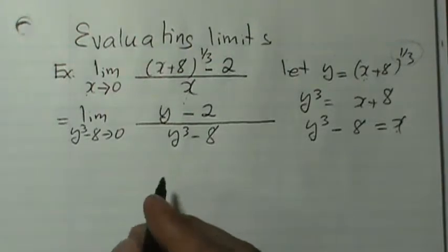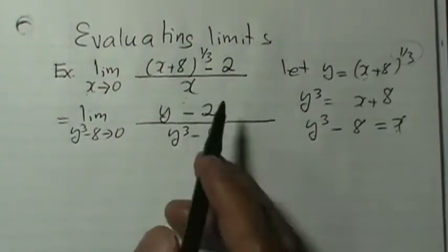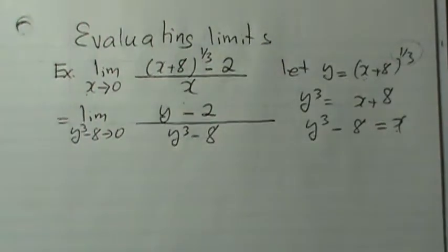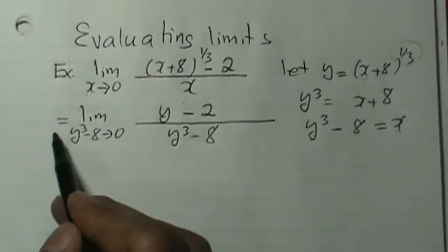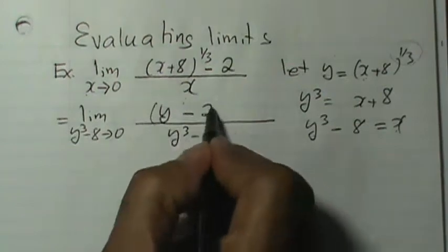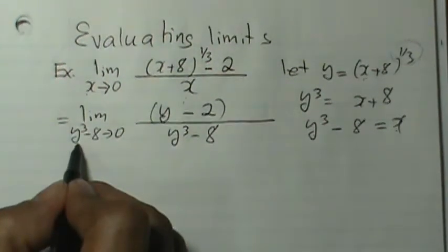Now we should be able to simplify. We couldn't simplify with a higher root than the square root directly — if it was a square root, we would have done rationalization. Since it's a higher root than the square root, we use change of variable. Please keep that in mind. Since we did that, now we should be able to simplify by applying difference of cubes to the denominator, and at the same time get y by itself on the limit side.